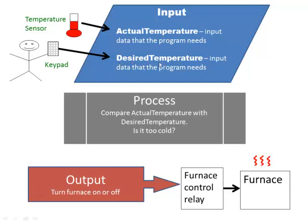Once it gets its input — it reads the actual temperature and knows what temperature we want it to be — now it has to do some processing. It's going to compare actual temperature with desired temperature and ask the question: is it too cold? Really, what it's doing is asking, is actual temperature less than desired temperature? Then it makes a decision on what to do, and that's the output stage — it turns the furnace on or off.